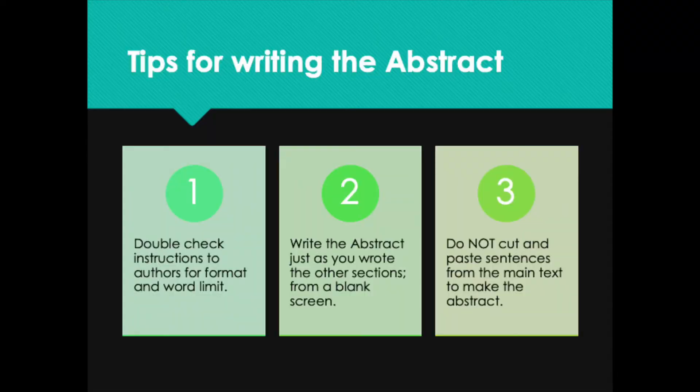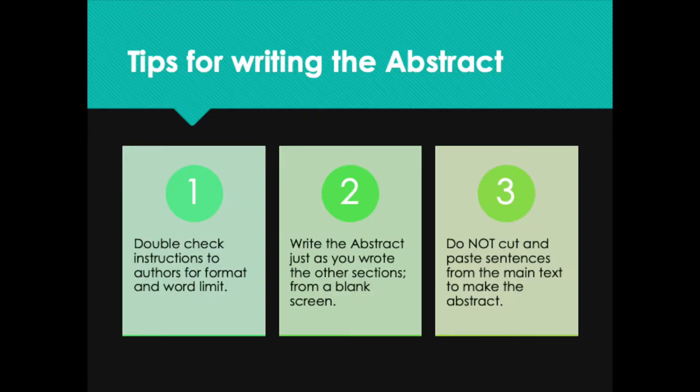Let's look at some tips for writing the abstract. The first tip is: before you start, go back and double-check the instructions to authors for your target journal — that's going to tell you the format and the word limit of the abstract. An abstract is short, and that makes it really hard to write. Tip number two: write the abstract just like you wrote the other sections — start from a blank screen. Tip number three goes along with that: do not cut and paste sentences from the main text to build the abstract. When readers see the same sentence twice they tend to tune out, and it makes the abstract not flow very well. Making pasted sentences match requires a lot of editing, which will probably take more time than just writing the abstract from a blank page.